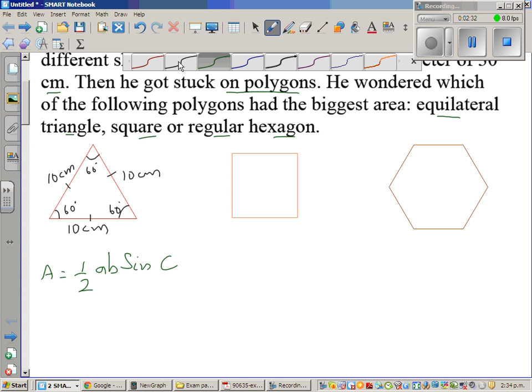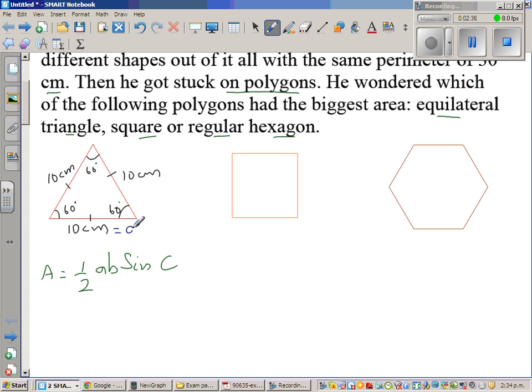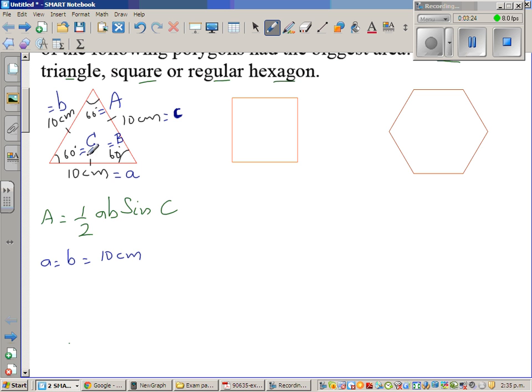This has come from the half base times height formula. If this is side a, this is side b, and this is side c, the angle opposite to side c is called angle C. This is angle A and this is angle B. This is the convention of writing angles and sides.